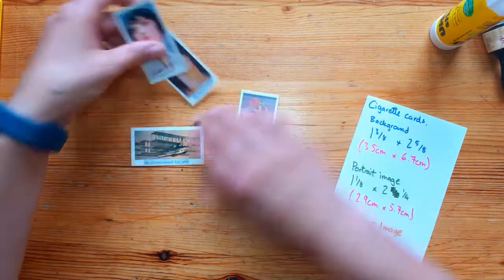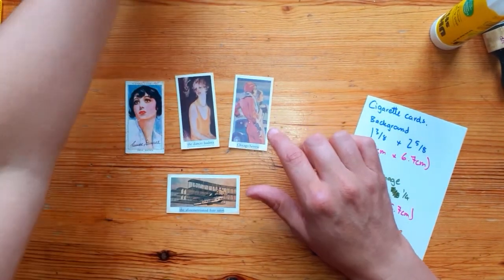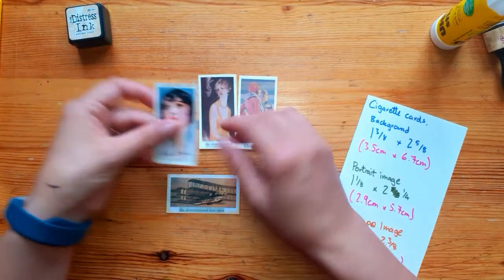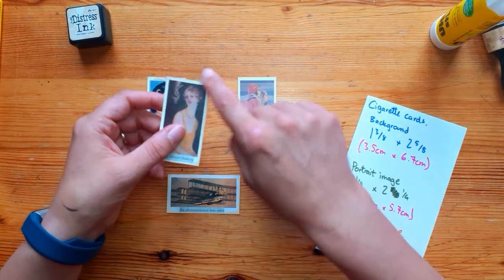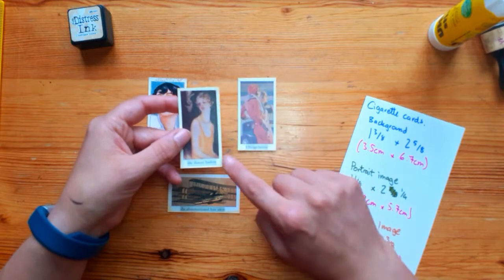So what I've done with the edges of these is I have distress inked them. I have used antique linen because you've got like vintage photo which is a darker brown, but I felt if I used a brown it would just be too strong.